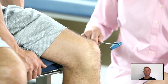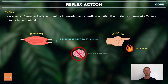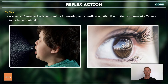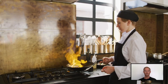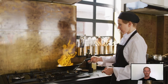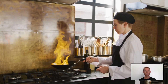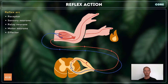A reflex action can be defined as a means of automatically and rapidly integrating and coordinating stimuli with the responses of effectors. In other words it's an extremely quick response to a change in the environment that doesn't involve conscious thought. Examples include coughing or sneezing due to irritant particles in the nasal passages, or blinking automatically when something comes into contact with the eye. Reflex actions are important as they help organisms to quickly adapt to an adverse circumstance that might otherwise result in harm. A reflex occurs via a neural pathway in the nervous system called a reflex arc.